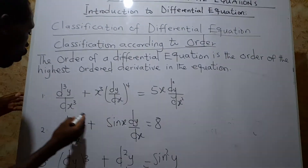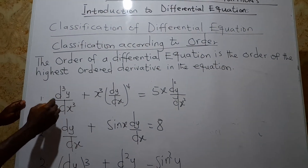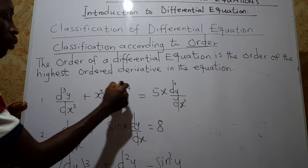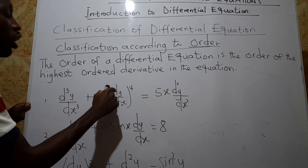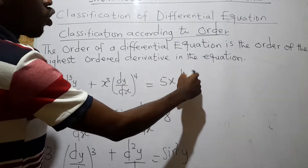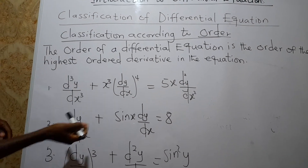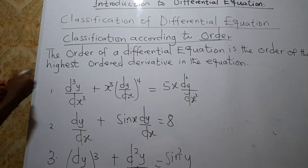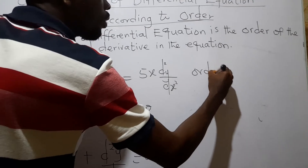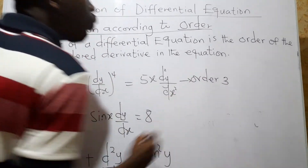Let's look at an example. This derivative is of order 3, this one is of order 1 (note: it is exponentiated, so the order is 1), and this one is of order 2. The highest order here is 3, so we can boldly say that this differential equation is of order 3.